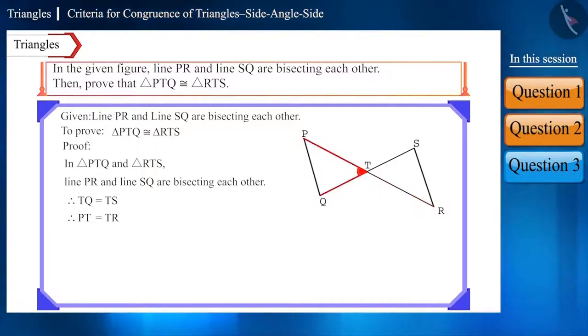if the angles between these sides, that is, angle PTQ and angle RTS are equal, then these triangles can be said to be congruent according to the SAS criterion. And since PR and SQ are lines and are intersecting each other at T, therefore, angle PTQ is equal to angle RTS as they are vertically opposite angles.